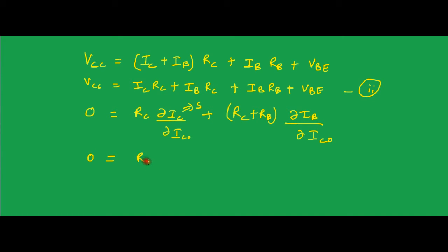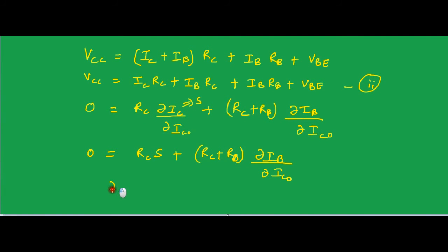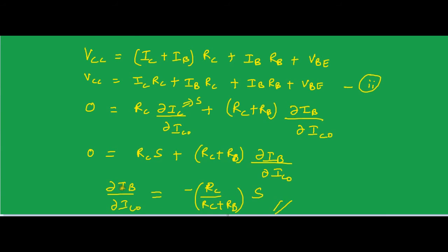So we can write: 0 = RC into S plus (RC plus RB) into delta IB upon delta ICO. From this we get delta IB upon delta ICO equals minus RC upon (RC plus RB) into S. This is the value of delta IB upon delta ICO, which we now substitute into the main general equation to get the stability factor of collector to base bias.